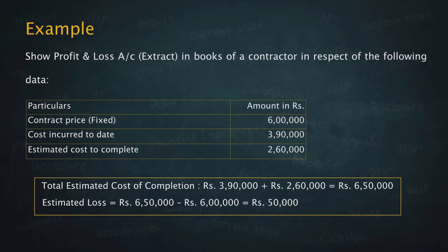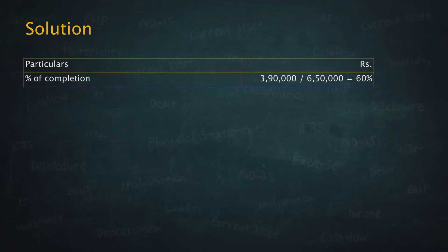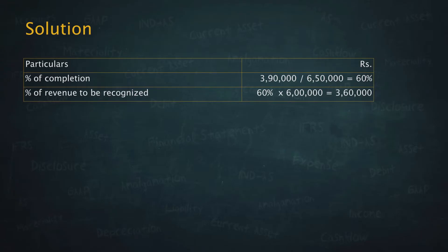What is the stage of completion? It is 3,90,000 by 6,50,000, which gives 60 percent — the percentage of completion, or degree of completion, is 60 percent. The accounting standard says apply 60 percent on total contract revenue of 6 lakhs, which gives 3,60,000.